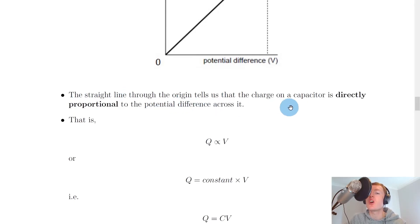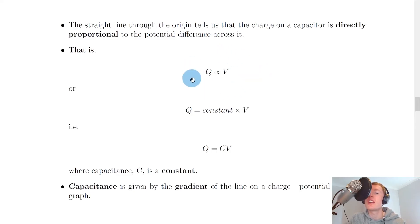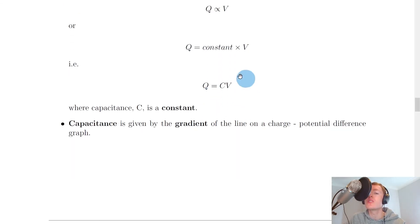And what this tells us is that the charge on a capacitor is directly proportional to the potential difference across it. Or in symbol form we could say q is directly proportional to v. Or remember the little mathematical trick, in order to get rid of this directly proportional sign, if we want to introduce an equal sign, we need to multiply this thing on the right hand side by a constant. So this gives us q equals a constant times v, i.e. q equals cv, where the capacitance c is a constant.